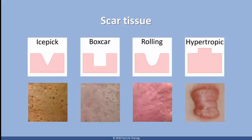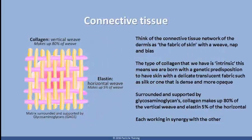These include cells such as the fibroblast and connective tissue such as collagen and elastin. I often refer to the connective tissue network of the dermis as the fabric of skin with a weave, nap and bias. The type of collagen that we have is intrinsic. This means we are born with a genetic predisposition to have skin with a delicate translucent fabric such as silk, or one that is dense and more opaque.